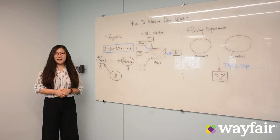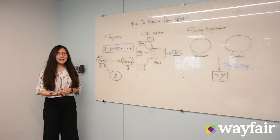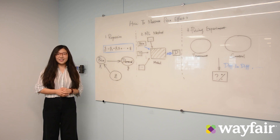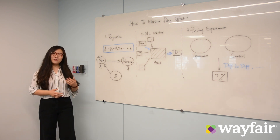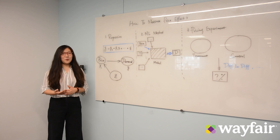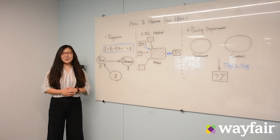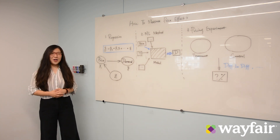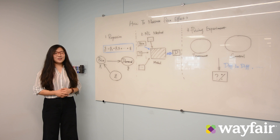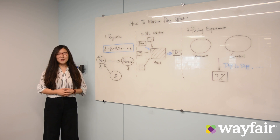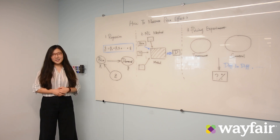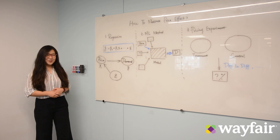As an e-commerce company, we have tens of millions of products in our catalog and we need a price for every one of them. So it's very important for us to make sure that our pricing strategy is optimal, but it's not a trivial thing to do. I'd like to introduce you a couple of ways that we actually do that.